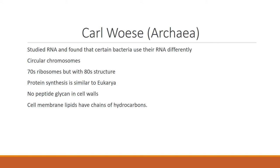Archaea have a lot of the same characteristics as bacteria, such as circular chromosomes and 70S ribosomes, but they have an 80S structure — so their size is the same, but the structure is similar to 80S. Protein synthesis is actually similar to eukaryotes. There is no peptidoglycan in the cell walls, and instead the cell membrane lipids have chains of hydrocarbons.